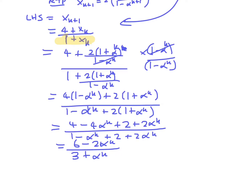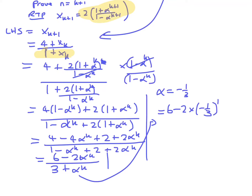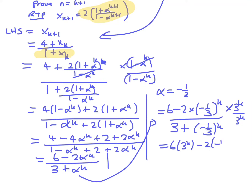So why is that actually equal to the right-hand side? What we need to do is put in alpha equals minus 1 third. So that's going to be (6 minus 2 times (minus 1 third)^k) over (3 plus (minus 1 third)^k). If I multiply by 3^k on both sides, that would be (6 times 3^k minus 2 times (minus 1)^k) over (3 times 3^k plus (minus 1)^k), because the bottom will cancel out.